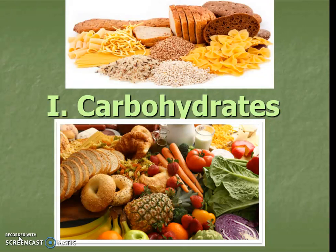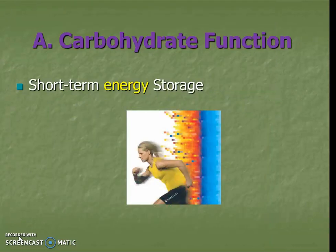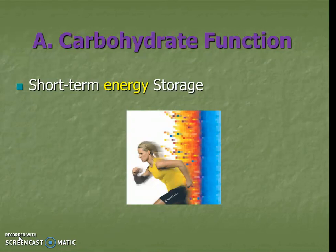Last time we talked about the four major categories of polymers or macromolecules, and one of them was carbohydrates. Carbohydrates are all about short-term energy storage. That part about it being quick energy is really important, which is why you have like a pasta party before a big game or big race, because it gives you quick energy.